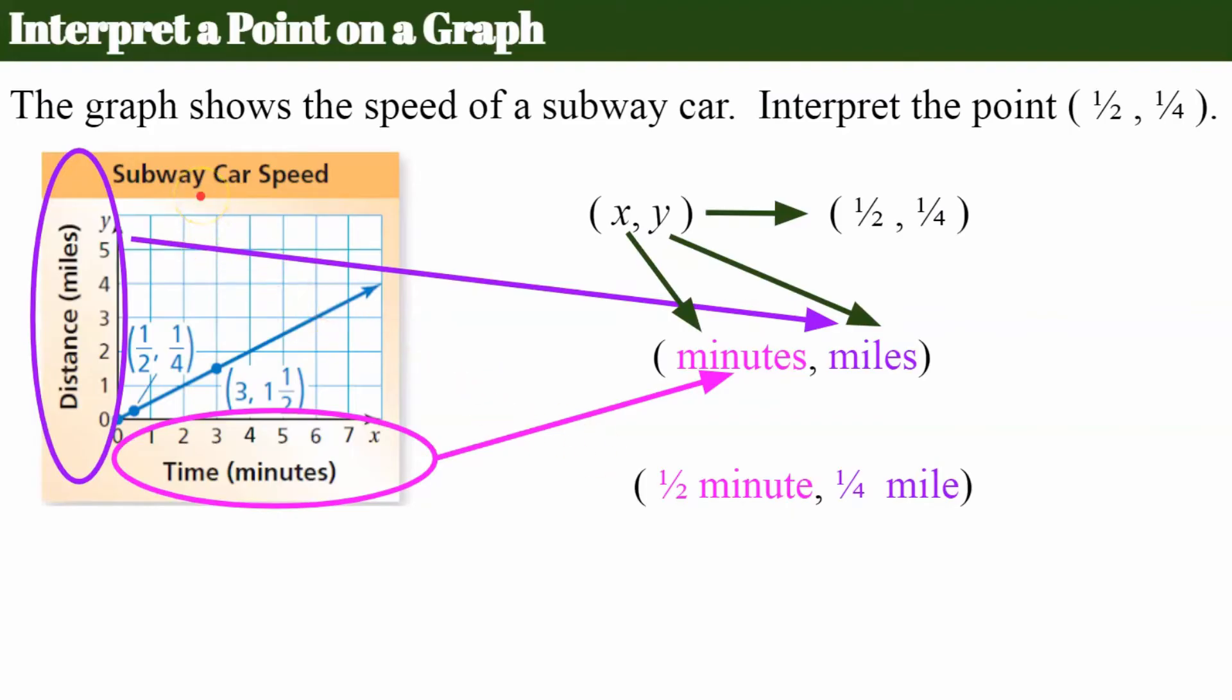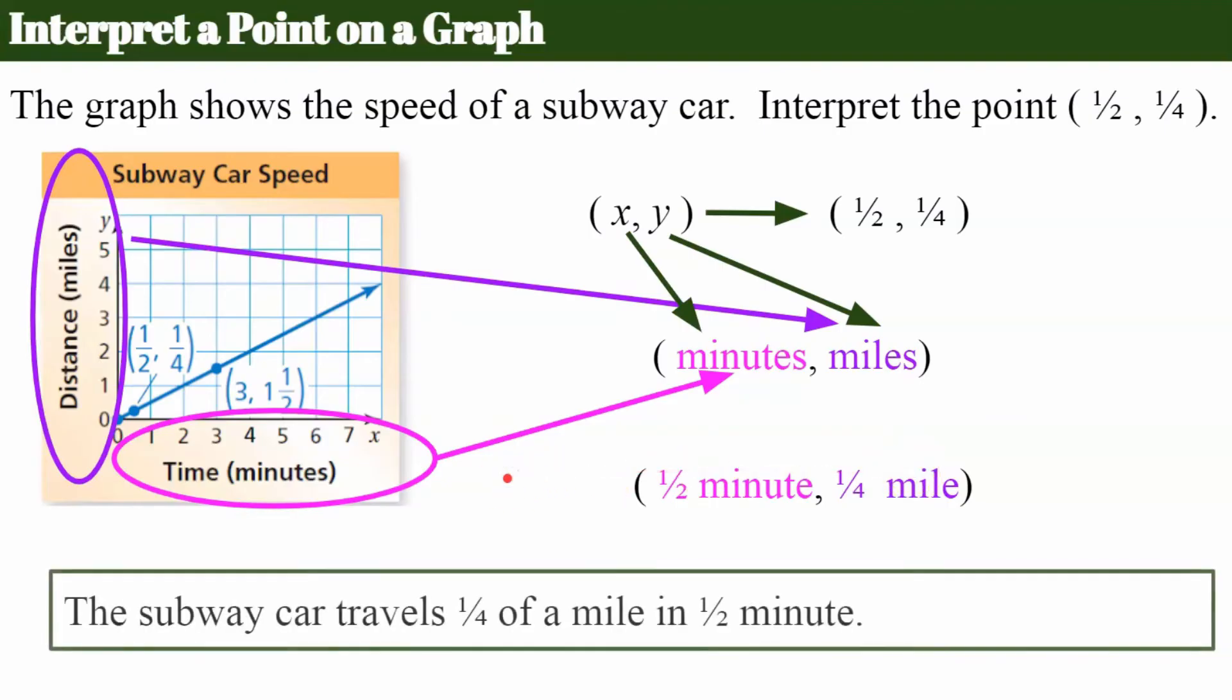The title of your graph, the x-coordinate value and unit, and the y-coordinate value and unit. So here we go. The subway car travels 1/4 of a mile in half of a minute.